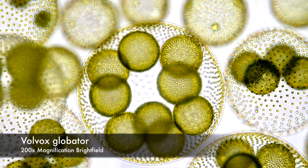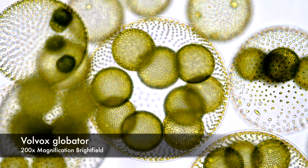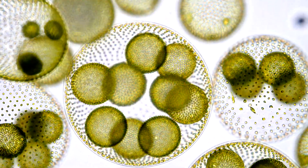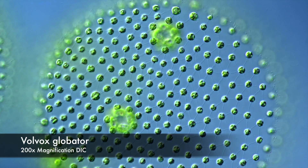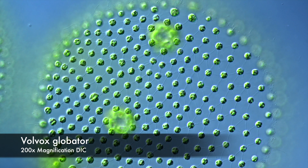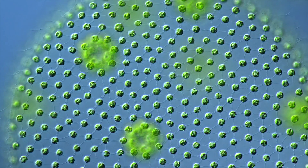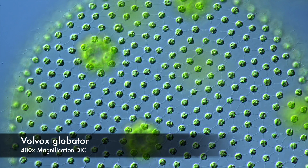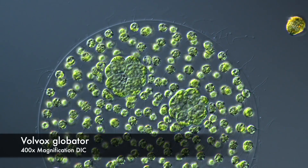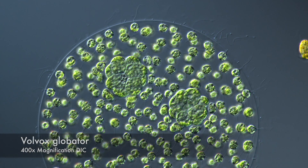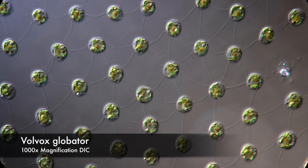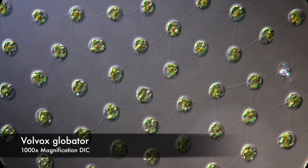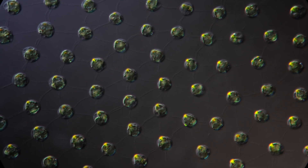Volvox is a multicellular alga, around half a millimeter in diameter. Like all algae, volvox is able to do photosynthesis, just like plants. The spheres consist of an outer layer of cells arranged in a regular pattern. The cells are embedded in a jelly-like matrix, holding them in place and giving the sphere its shape. This jelly layer is the so-called extracellular matrix. Additionally, the cells are connected by plasma bridges looking like roads on an idealized map.